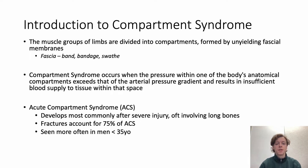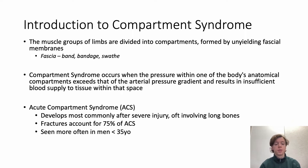Muscle groups of the limbs are divided into compartments formed by unyielding fascial membranes. Compartment syndrome occurs when the pressure within one of the body's anatomical compartments exceeds the arterial pressure gradient, resulting in insufficient blood supply to the tissue in that space. Acute compartment syndrome develops most commonly after severe injury, often involving long bones. Fractures account for 75% of acute compartment syndrome, and it's seen more often in men less than 35 years old with greater muscle mass.